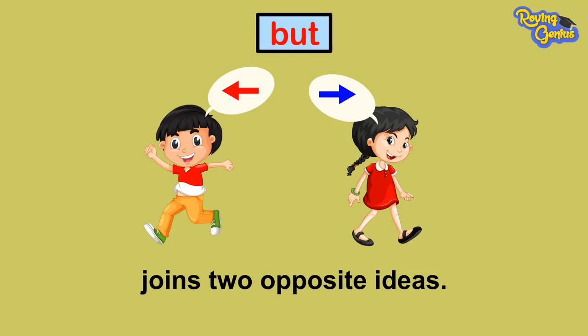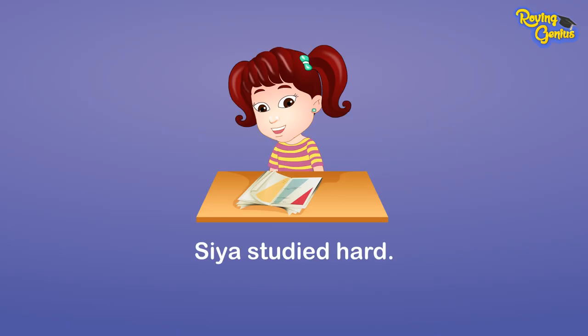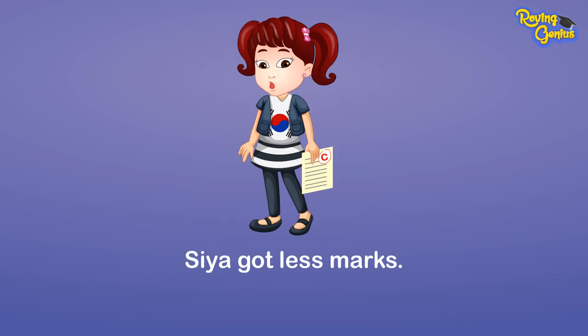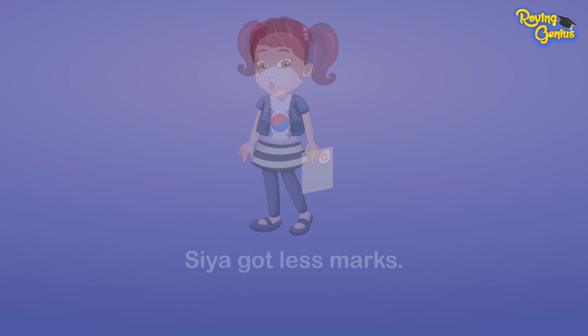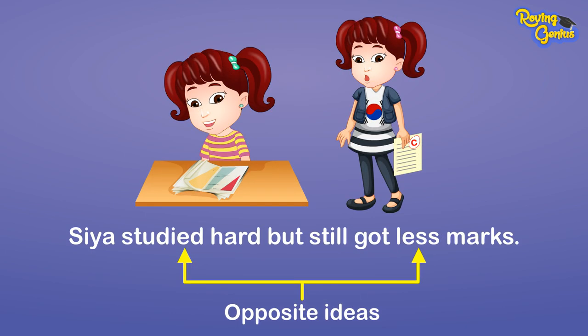BUT joins two opposite ideas. For example, Sia studied hard. Sia got less marks. Sia studied hard but still got less marks.